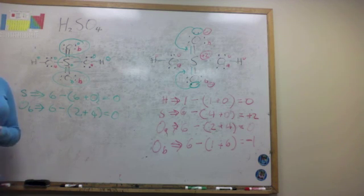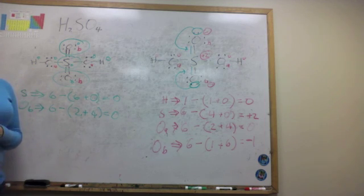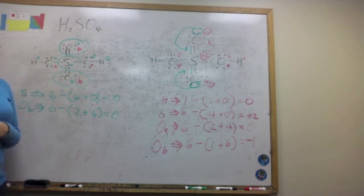In general, you should always draw a Lewis structure that minimizes the formal charge, or has as many atoms with a zero formal charge as possible.